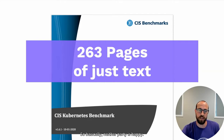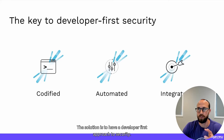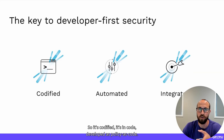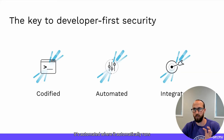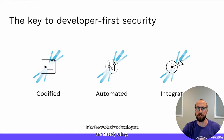So basically neither party is happy. The solution is to have a developer-first approach to security — codified, automated, and integrated. It's in code, developed as policy as code. It's automated where it automatically runs and it's fast. And it's integrated into the software development lifecycle, into the tools that developers are already using.